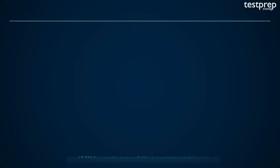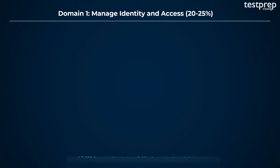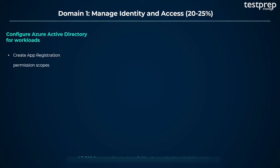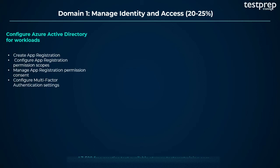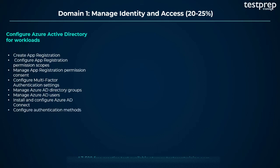Now let us discuss the course outline topics in detail. First, manage identity and access. Number 1: Configure Azure Active Directory for Workloads. It contains 10 subtopics: create app registration; configure app registration permission scopes; manage app registration permission consent; configure multi-factor authentication settings; manage Azure AD directory groups; manage Azure AD users; install and configure Azure AD Connect; configure authentication methods; implement conditional access policies; and configure Azure AD identity protection.